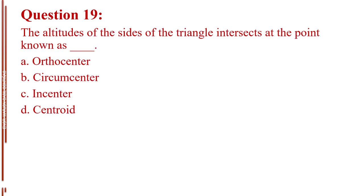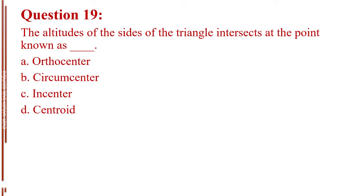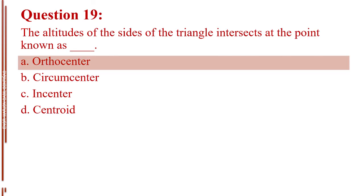Question number nineteen. The altitudes of the sides of the triangle intersect at the point known as blank. Letter A, orthocenter. Letter B, circumcenter. Letter C, incenter. Letter D, centroid. The answer is Letter A, orthocenter.